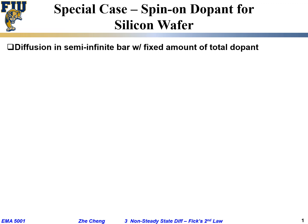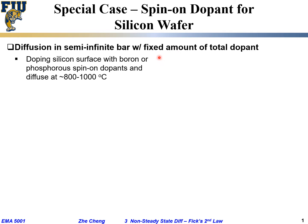Let's look at a second example called 'read to yourself': spin-on dopant for silicon wafer. This is for either silicon solar cells or semiconductor processing for computer chips. Mathematically, it's the diffusion in a so-called semi-infinite domain — semi, not fully infinite — with a fixed amount of total dopant. The example would be driving the acceptor boron or donor phosphorus into silicon.